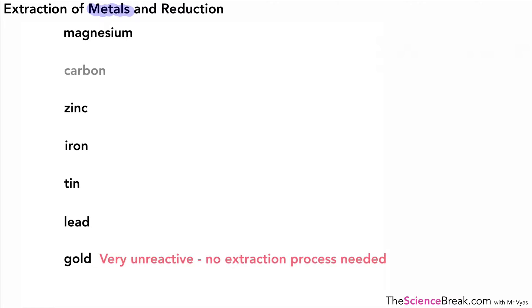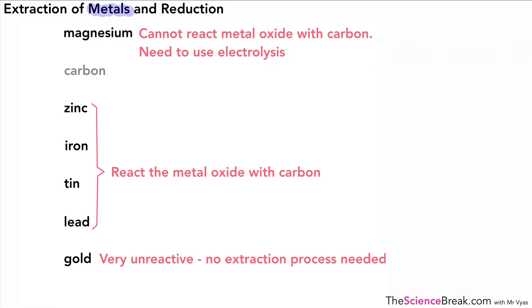The gold is very unreactive, there's no process needed to extract it. However, these metals here, we need to react the metal oxide with carbon in order to get the metal. If we go above carbon in the reactivity series, well, we can't react the metal oxide with carbon, we need to use a different process and that process is electrolysis.